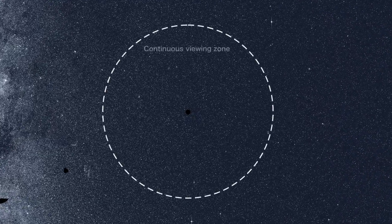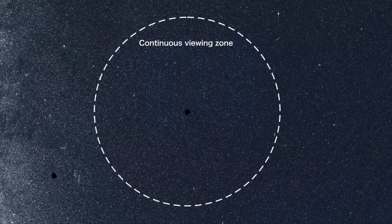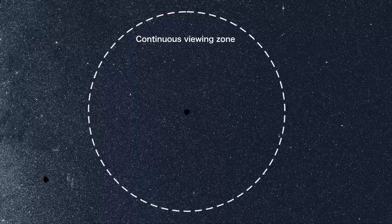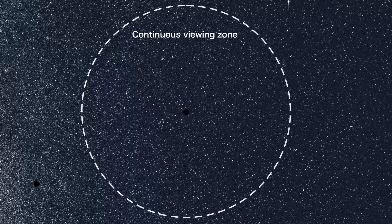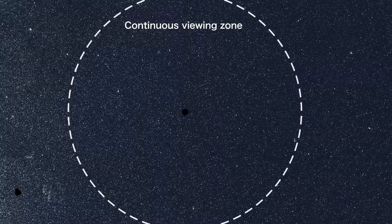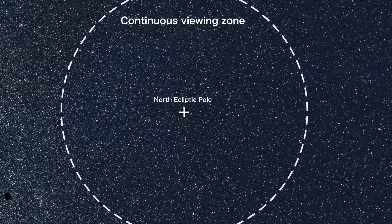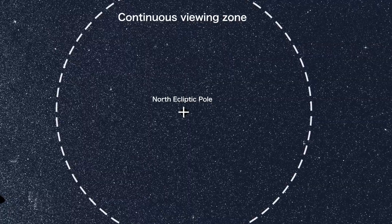At the center is the continuous viewing zone. Here, the view of one TESS camera overlaps across all 13 sectors, which means TESS monitored the region for nearly an entire year. At its center is the north ecliptic pole. This is where the imaginary axis of Earth's orbit around the Sun meets the sky.